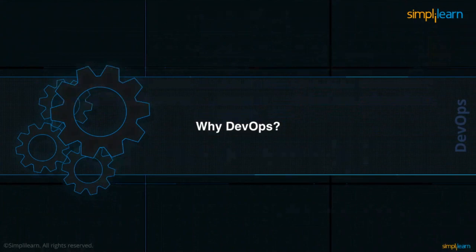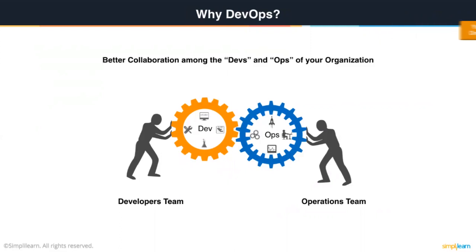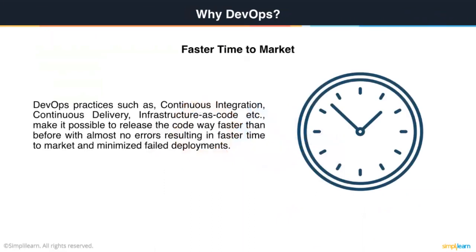Let's try and understand why DevOps has become so popular in recent times with IT companies. The first and foremost benefit is that it makes your developers and operations folks collaborate in a much better way with a lot less friction. They have a common goal — to make sure the application is up and running. Practices such as continuous integration, continuous delivery, and infrastructure as code make it possible to release code way faster than before with almost no errors, resulting in faster time to market and minimized failed deployments.